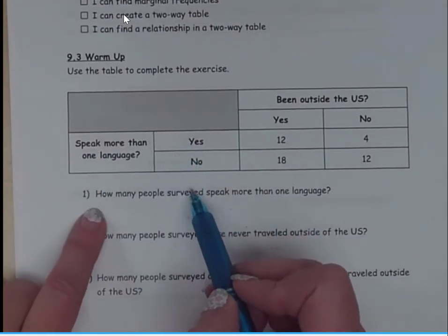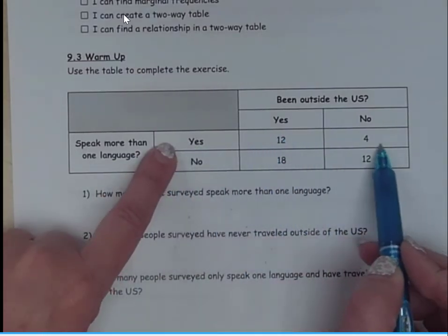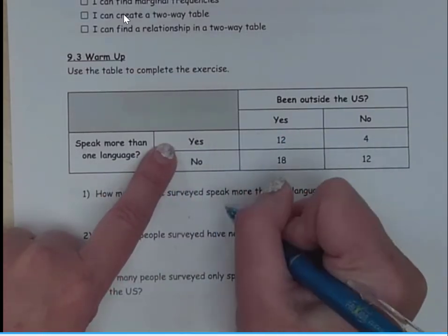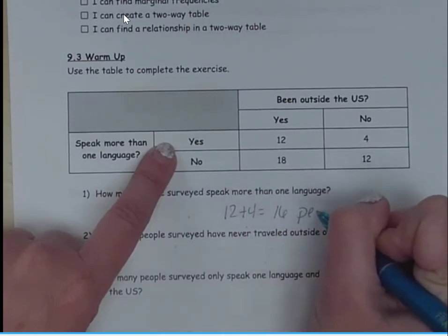All right, how many people surveyed speak more than one language? Speak more than one language? Yes. So that is 12 plus 4, so that is 16 people.